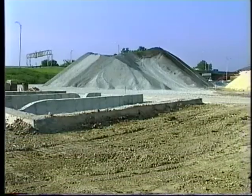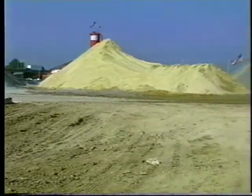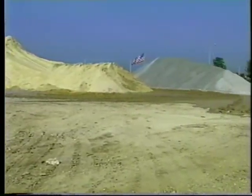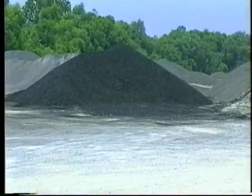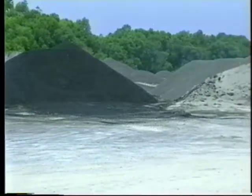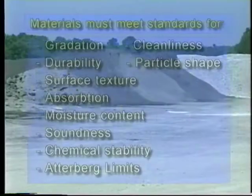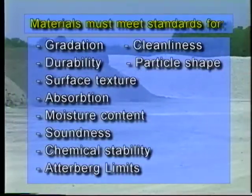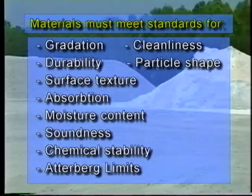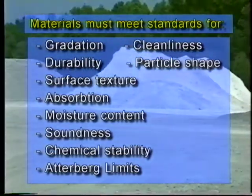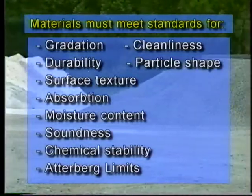Soil is used for embankments, base courses, and as a component of soil cement and other mixtures. Aggregates are also used in a variety of construction materials, such as asphalted concrete, Portland cement concrete, base courses, and aggregate surface courses, including shoulders. Materials must meet standards for gradation, cleanliness, durability, particle shape, surface texture, absorption, moisture content, soundness, chemical stability, and Atterberg limits before they can be used on a project.